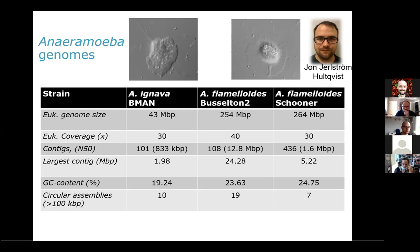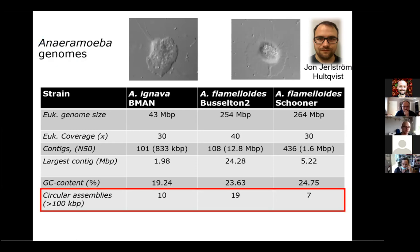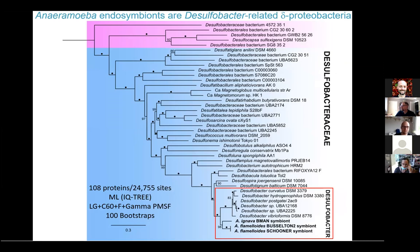I will not talk much today about the host genomes and will focus more on the symbiont genomes. Along with the host genomes, we obtained a number of circularized assemblies containing highly covered Desulfobacteria-c genomes. We performed a phylogenomic analysis and could see that these organisms seem to belong to the Desulfobacteria genus, which matches well with the 16S analysis.